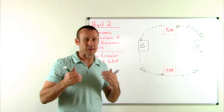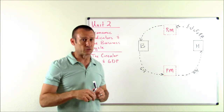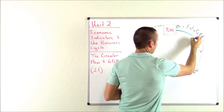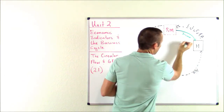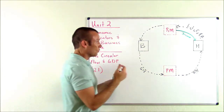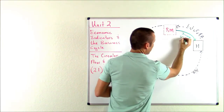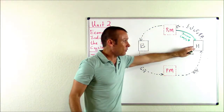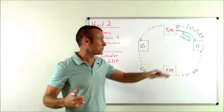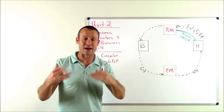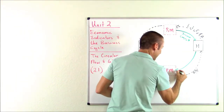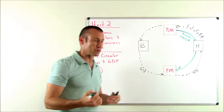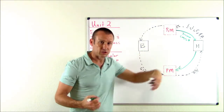I also want to show you the money flows. Households are going to earn income from providing resources. For land they earn rents, for labor they earn wages, for capital they earn interest, and for entrepreneurial ability they earn profits. Rent, wages, interest, and profits are types of income for households. They're going to use this income to buy goods and services — we call this household expenditures, or just C for consumption.